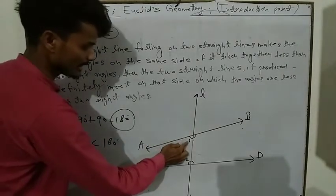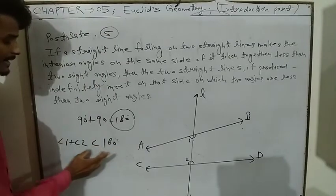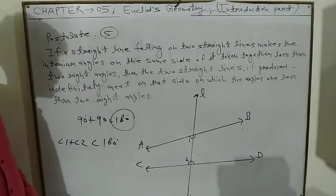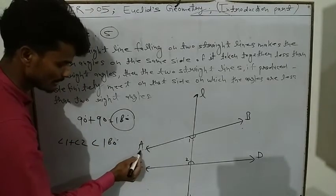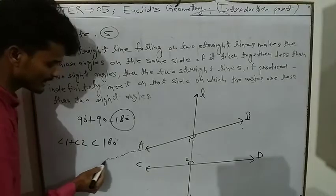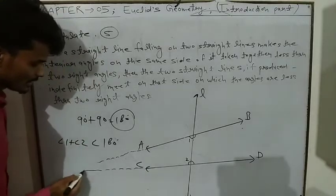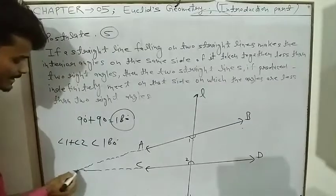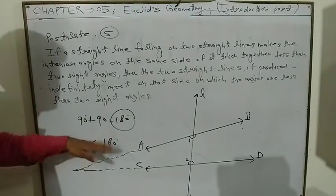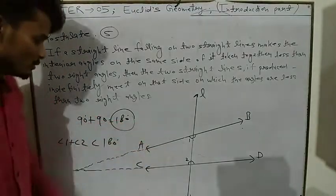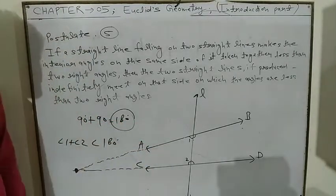So if we see here, the interior angles are less than two right angles. If we produce these two lines, then the two lines — say A, B, O, C — will eventually meet on the side where the angles are less than two right angles.